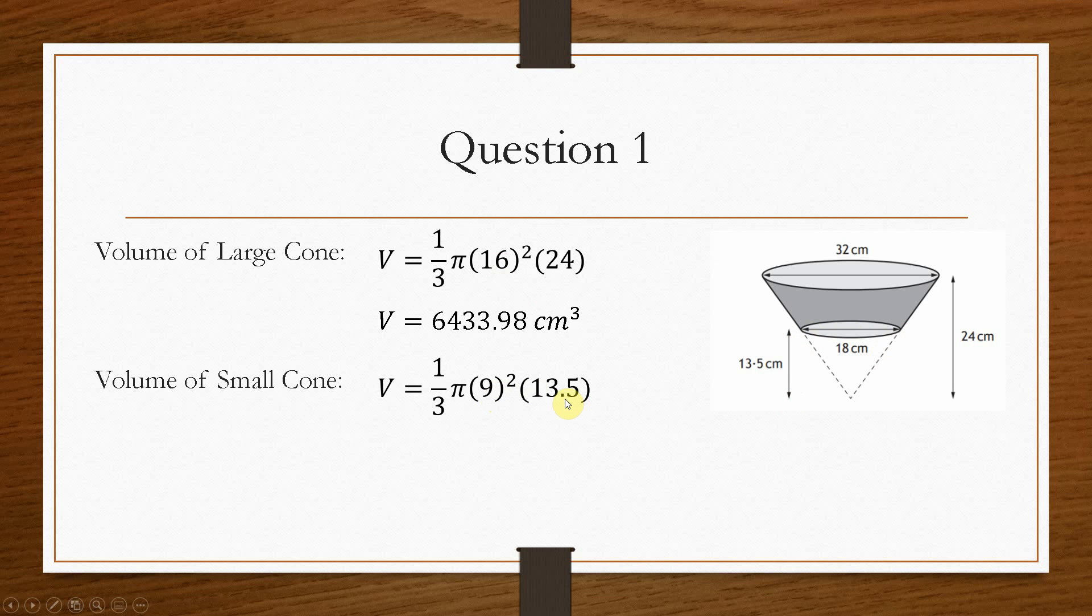So we just pop that into the calculator, and we get a value of 1145.11 centimetres cubed. So we've now worked out the volume of each of the cones.